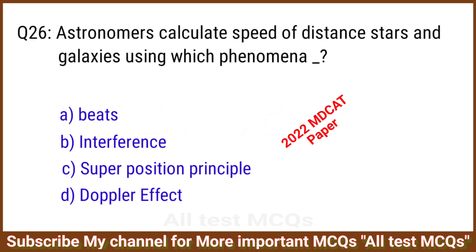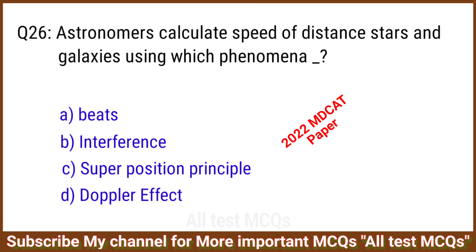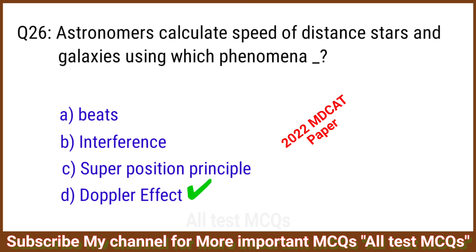Q26. Astronomers calculate the speed of distant stars in galaxies using which phenomenon? The right answer is option D: Doppler effect.